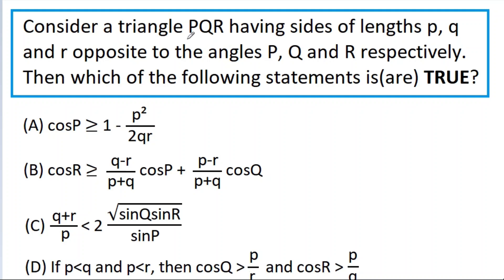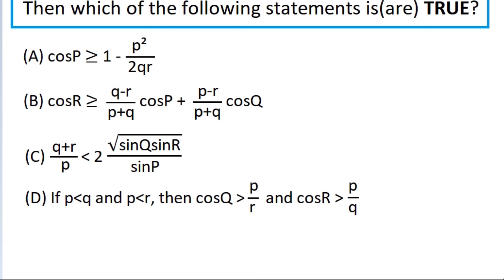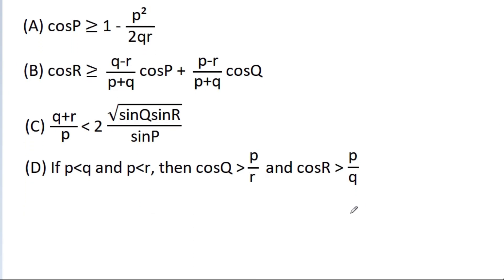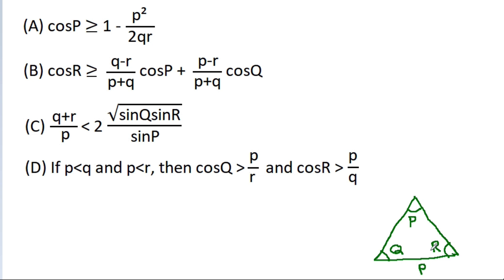We have to consider a triangle PQR having sides p, q, and r opposite to the angles P, Q, and R respectively. We have a triangle with angles P, Q, and R and sides p, q, and r. Then which of the following statements is or are true?